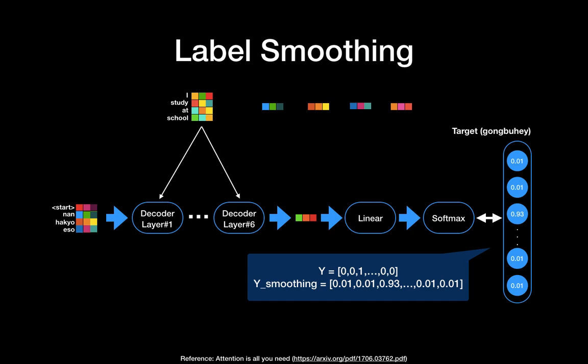For example, 'thank you' can have two different labels in Korean language: 'gomawo' or 'gamsahamnida.' Both are correct labels. By reducing the gap between the softmax output and the labels, the model can stabilize learning from noisy labels.